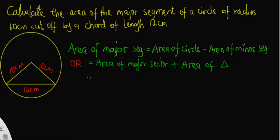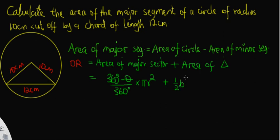Let's recall the formula for the area of the major sector: that equals (360° − θ) over 360 times the area of the circle. The area of the triangle equals ½ × base × height, which can also be written as ½ × A × B × sin θ, where A and B are the two sides of the triangle meeting at the center, and θ is the angle subtended at the center.